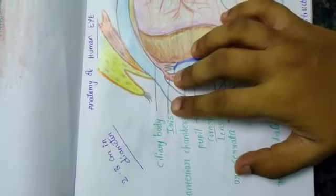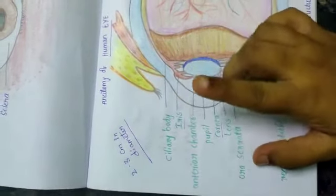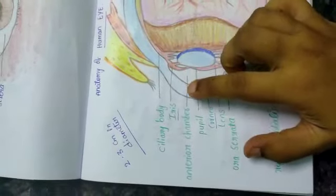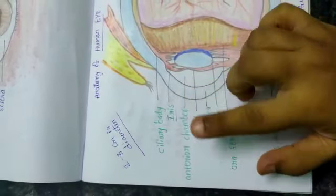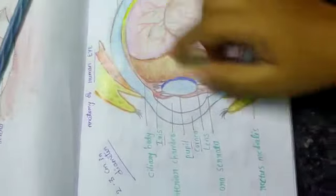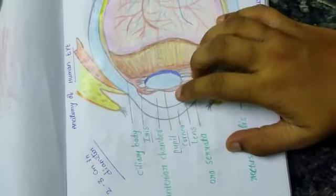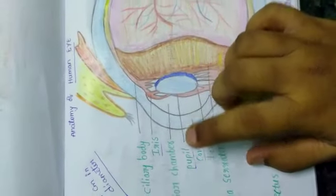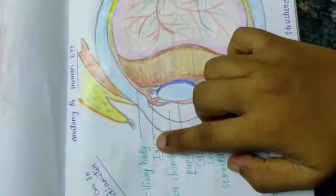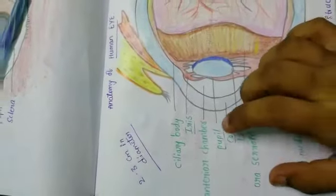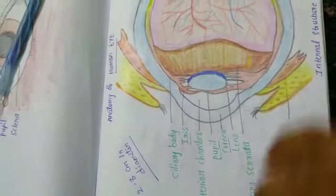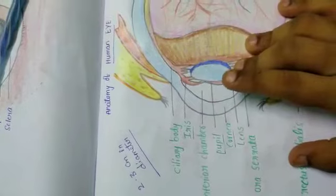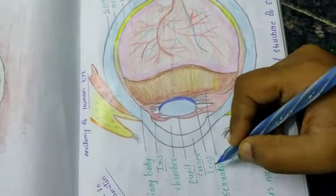Iris is a muscular ring-like structure behind the cornea. The color of the iris indicates the color of eye. Iris helps in regulating or adjusting exposure. Pupil is a small opening in the iris. Its size is controlled with the help of iris. It controls the amount of light that enters the eye.